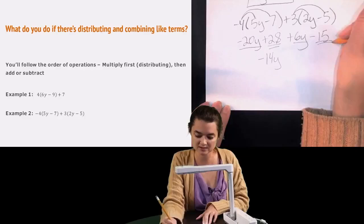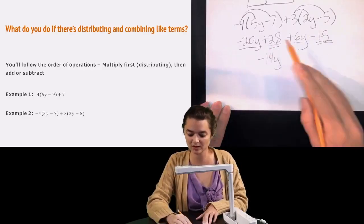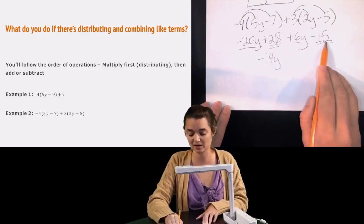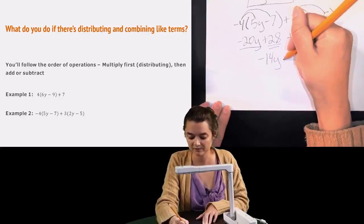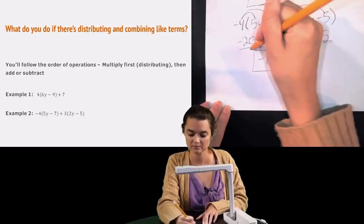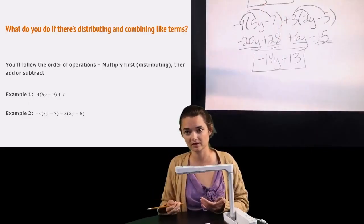And then I can combine my constants together. I have positive 28 minus 15. And 28 minus 15 is positive 13. So I'll have a plus 13 as my other term. And that's what it looks like to simplify these.